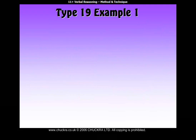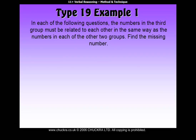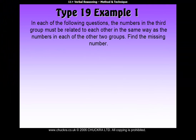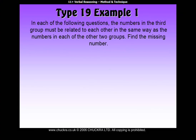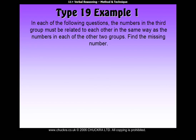Type 19 Example 1. In each of the following questions, the numbers in the third group must be related to each other in the same way as the numbers in each of the other two groups. Find the missing number.